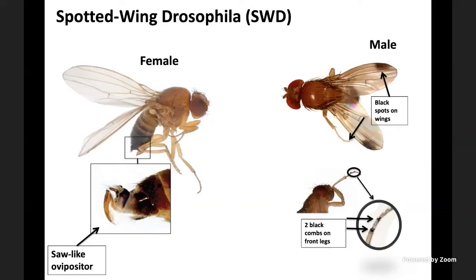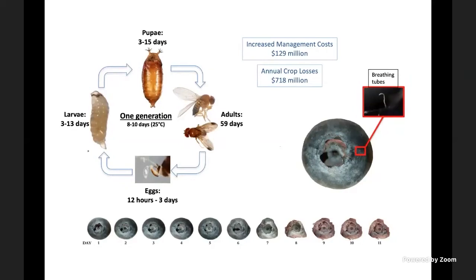Females of this species are uniquely equipped with a very sclerotized and serrated ovipositor that they use to lay eggs in otherwise healthy fruit. Larvae develop inside the fruit and start feeding; the whole generation from egg-laying to adult emergence can be completed in 8 to 10 days at 25°C, and faster at higher temperatures. The overall economic impact of this fly was estimated at $718 million in the US in 2014, plus an additional $129 million in management costs — approximately a billion-dollar pest across all affected crops.